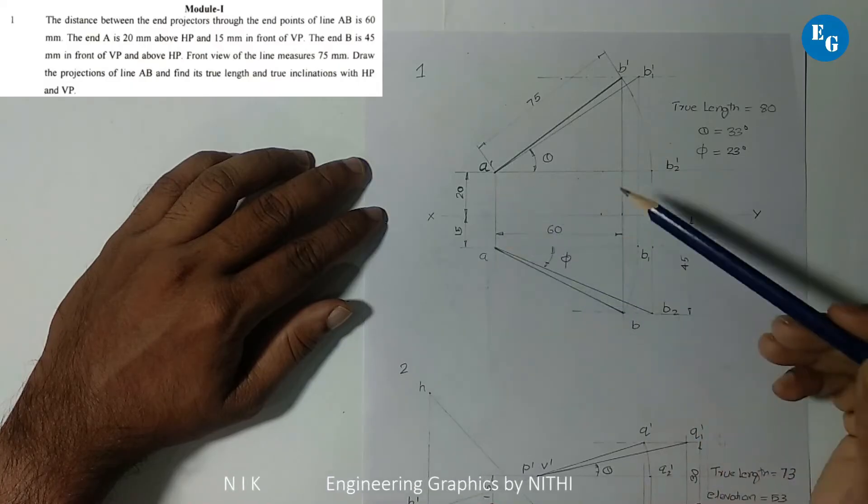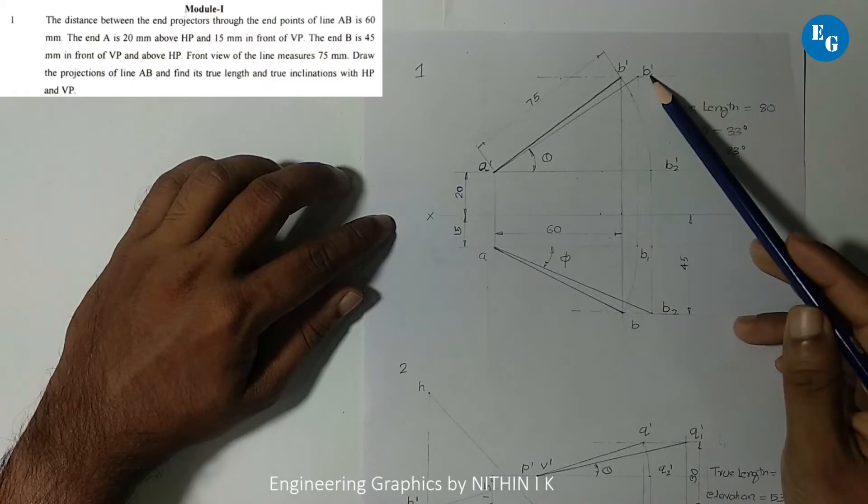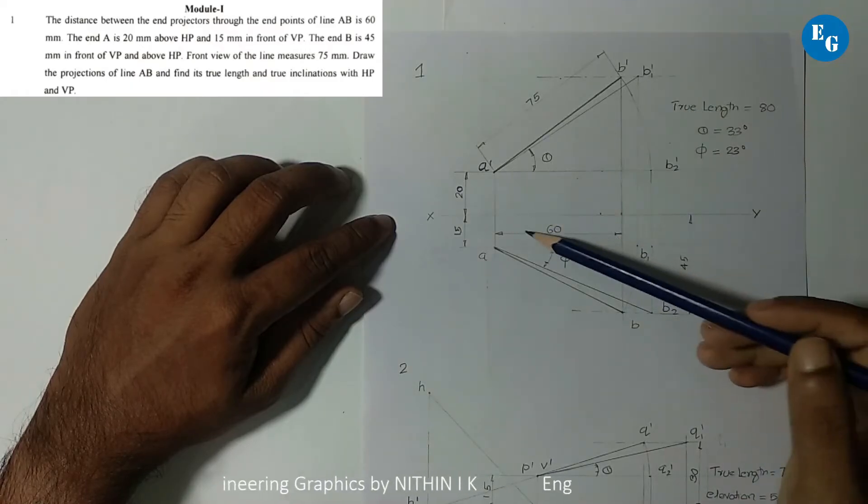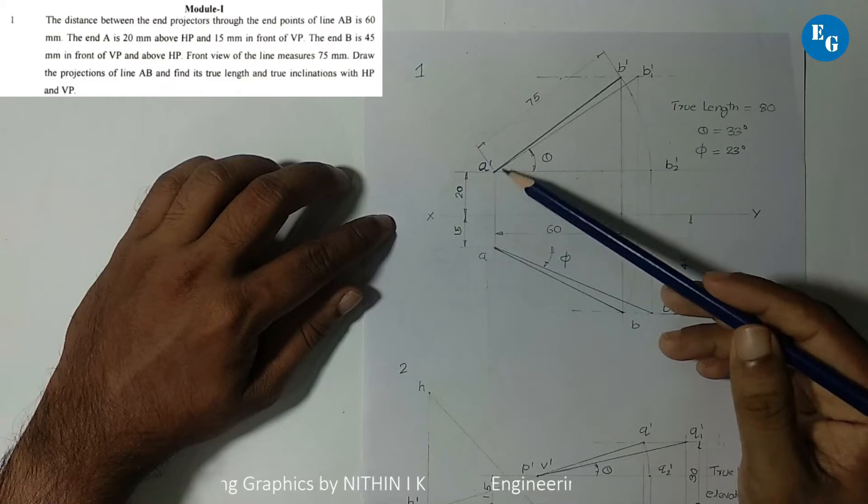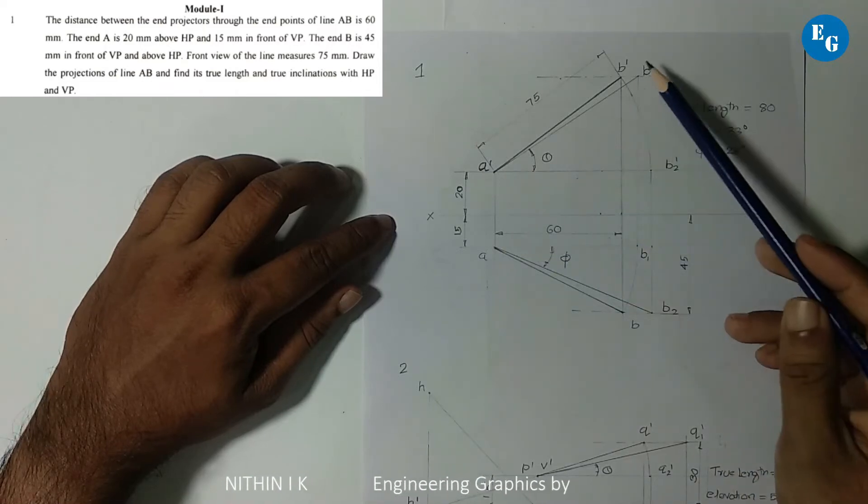Point A is located. B is 45 mm in front of A, and the distance between end projectors is 60 mm.